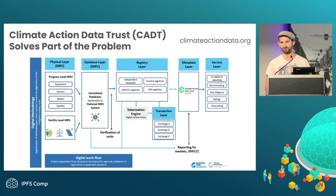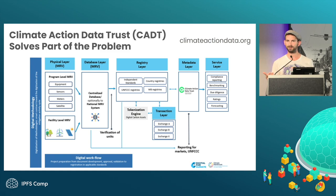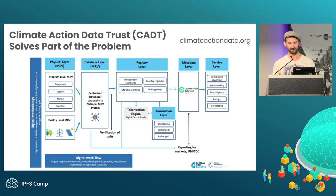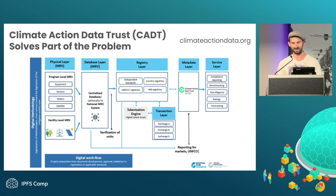There is a group called the Climate Action Data Trust that is working to solve this problem. The point is that registries provide data into this system, which has a standardized data schema — so if you're pulling data from Climate Action Data Trust, you don't need to worry about different registry data standards, as they homogenize that data for you. But there are some issues with CAD Trust, and I think IPFS may be able to help resolve some of those issues.